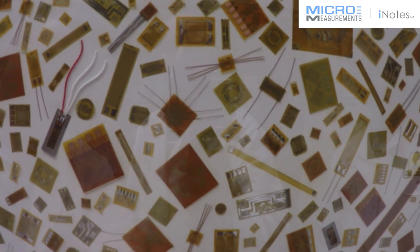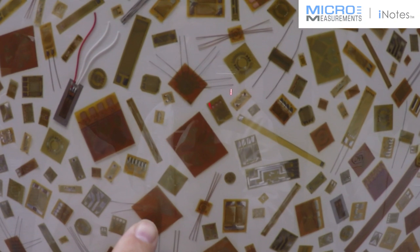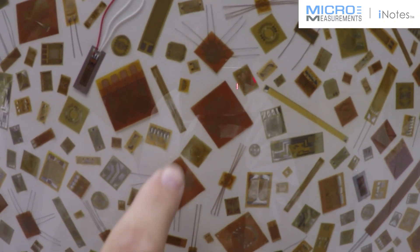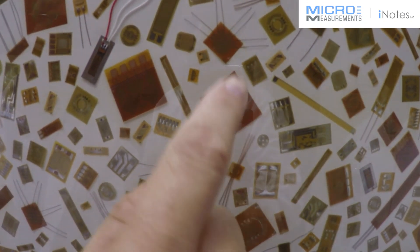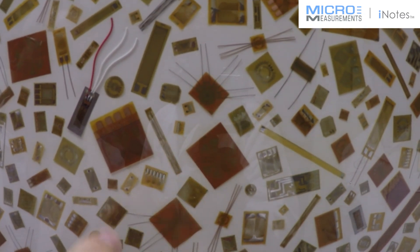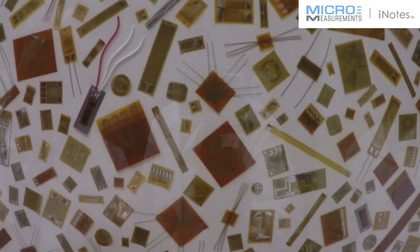The difference between this one and this one is that this one is stacked and these grids are at a 45 degree angle from each other. This one is a planar style rosette and these grids are at a 60 degree angle from each other.